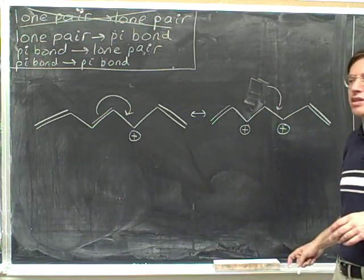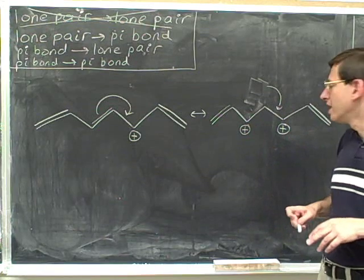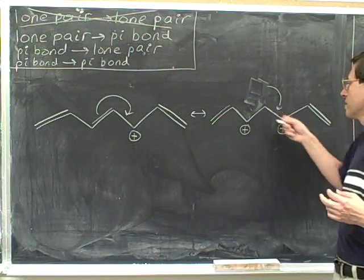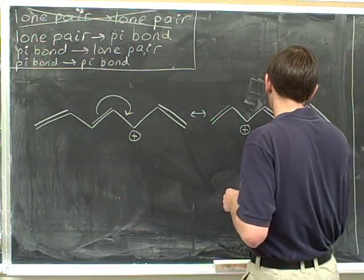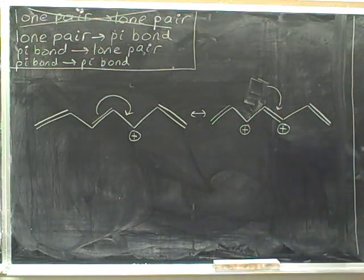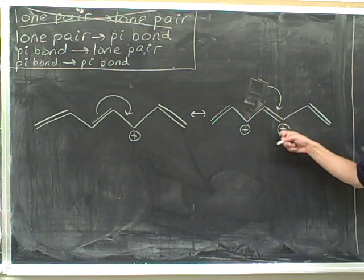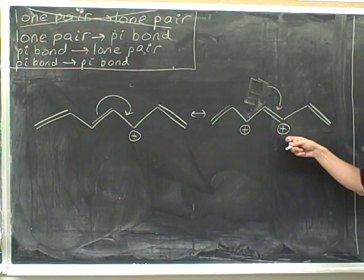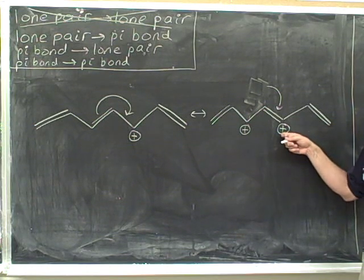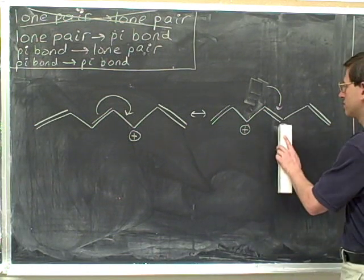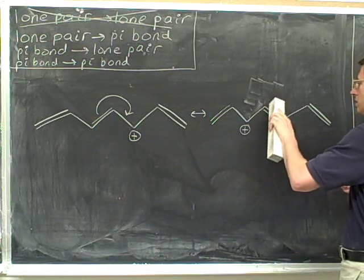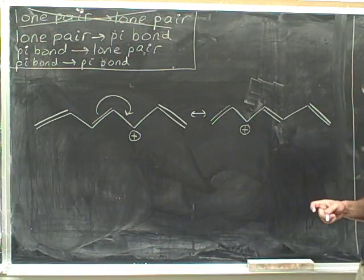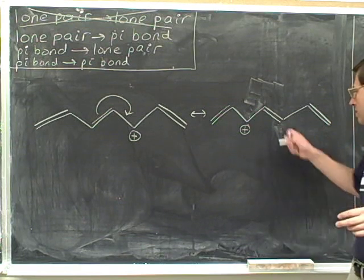I haven't erased the head of the arrow yet because we haven't dealt with that. The head of this arrow tells us where the electrons are going. The head of this arrow is in the middle of the sigma bond, which means we're creating a pi bond. There has to be one atom at the head that is becoming more negative, less positive. This atom here is the one that's changing — it gains the pi bond. It started with a positive charge, so if it becomes one step more negative, it just goes to zero. Now we can erase the head of the arrow.